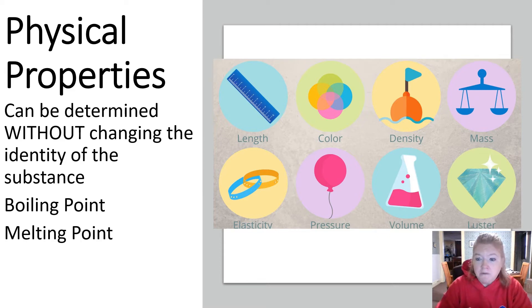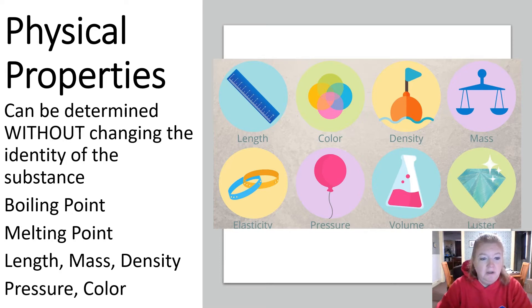Melting point, if you melt gold, it's still gold. You didn't change its identity. You can look at and measure mass, length, density, volume, shape, color, pressure, mass. There's tons of things that you can measure without changing the identity of the substance.